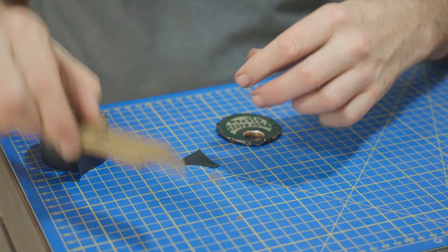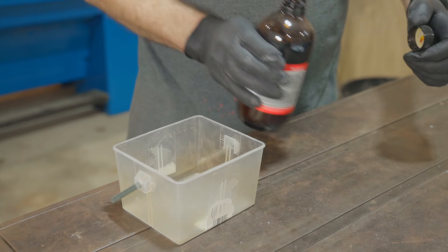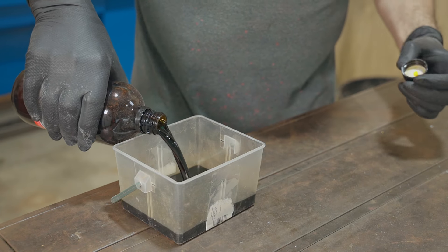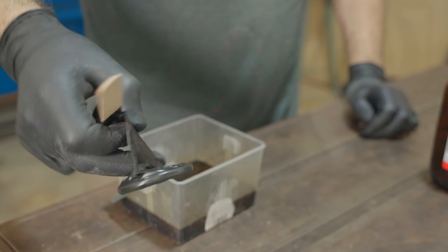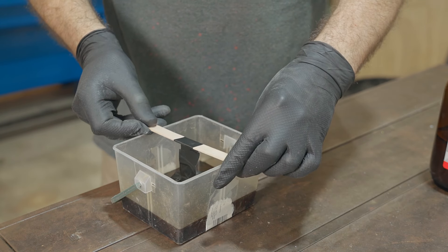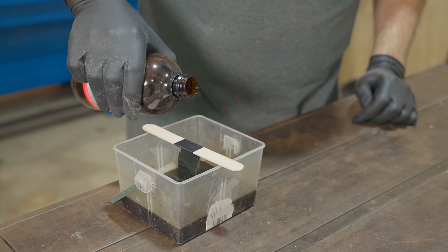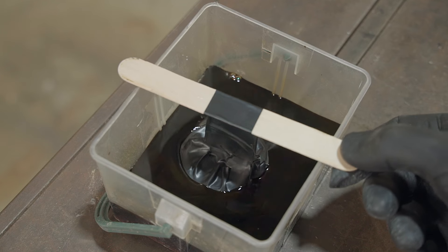And for the etching solution I'm using ferric chloride. I'll hang the brass upside down so the particles from the etching fall away and keep the face exposed to the ferric chloride.